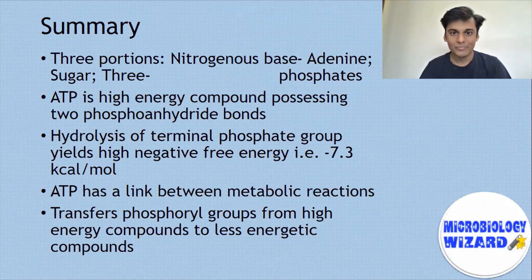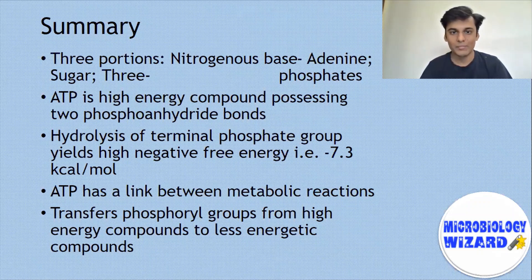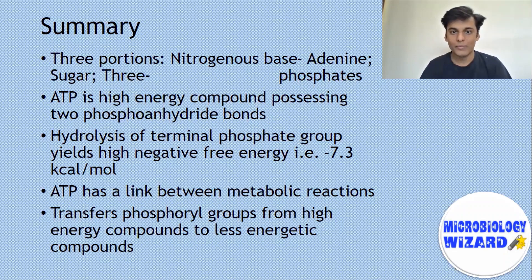In summary, this tutorial covered three major portions. The structure of ATP is made up of three portions: a nitrogenous base composed of adenine, a sugar composed of ribose, and three phosphorus groups. ATP is a high energy compound possessing two phosphoanhydride bonds. The hydrolysis of the terminal gamma phosphate group yields a negative free energy of 7.3 kilocalories per mole. ATP is a link between metabolic reactions as understood through the ATP-ADP cycle, and ATP transfers phosphoryl groups from high energy compounds to less energetic compounds. Thank you.